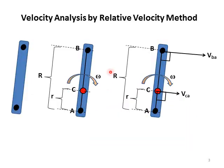Let's now go back to the formal topic — velocity analysis. We will be performing velocity analysis by the relative velocity method. We will perform this analysis on a link, and one of the simplest is the binary link — a link which has two nodes or two joints.